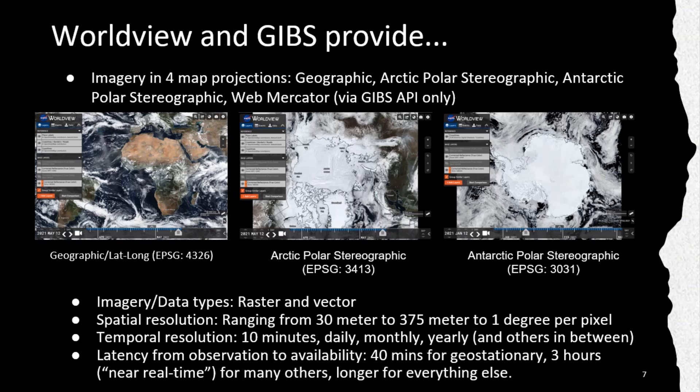Imagery is available in four projections: geographic, arctic polar, antarctic polar, and web mercator (only through the GIBBS API). Both raster and vector image data are available. Spatial resolution ranges from 30 meters to 0.75 to 1 degree per pixel. Temporal resolution varies from 10 minutes to daily, monthly, yearly, and others in between. Latency — the time from satellite observation to availability within Worldview — is approximately 40 minutes for geostationary, approximately 3 hours for near real time, and longer for many other datasets.